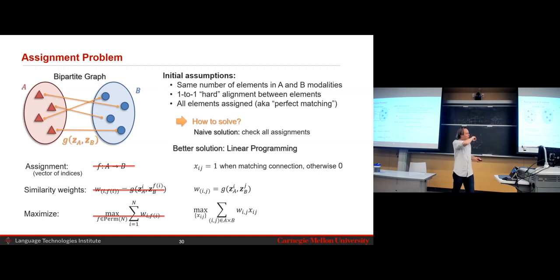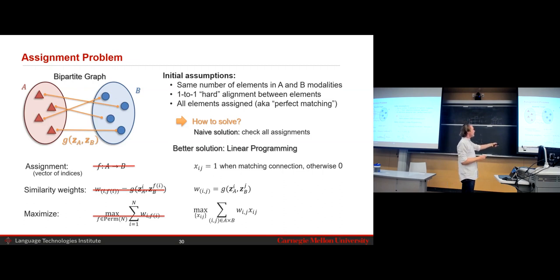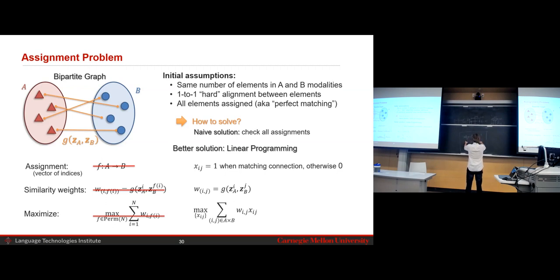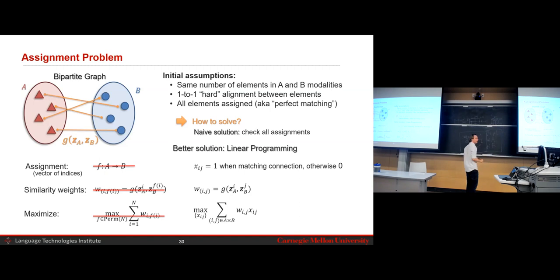The last part of today is continuous alignment. It's not just about discrete elements — in many cases with speech you have a continuous signal. There are at least two families of approaches: first, if you have two signals, instead of discretizing, you can try to warp or synchronize them — aligning them continuously. Second, you can take something continuous, discretize it by segmenting it or learning a dictionary of elements, and then use the discrete alignment methods. The primary approach for signal warping that you need to know is dynamic time warping (DTW).